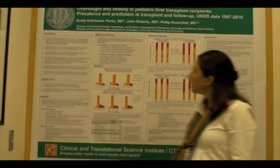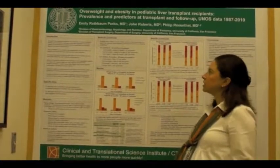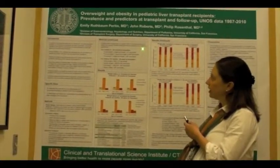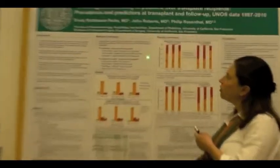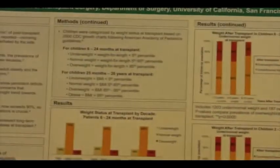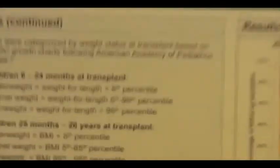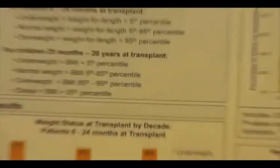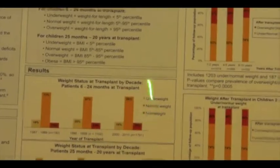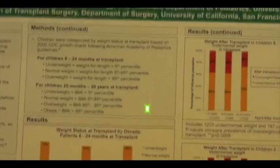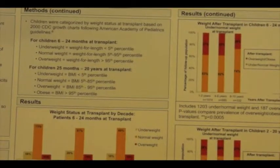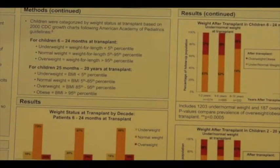We categorized patients by weight status according to American Academy of Pediatrics guidelines. For children 6 to 24 months of age at transplant, we categorized them as underweight, normal weight, or overweight. For those 2 to 20 years at transplant, we categorized them as underweight, normal weight, overweight, or obese.